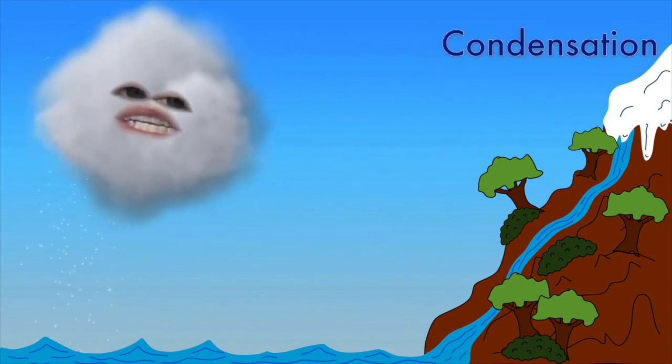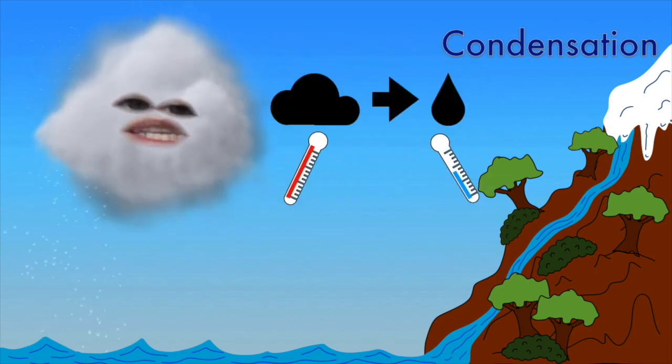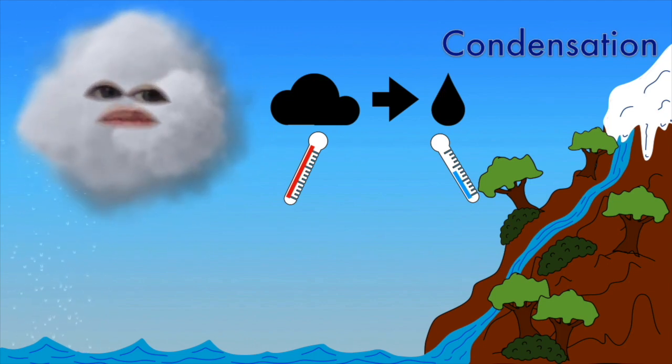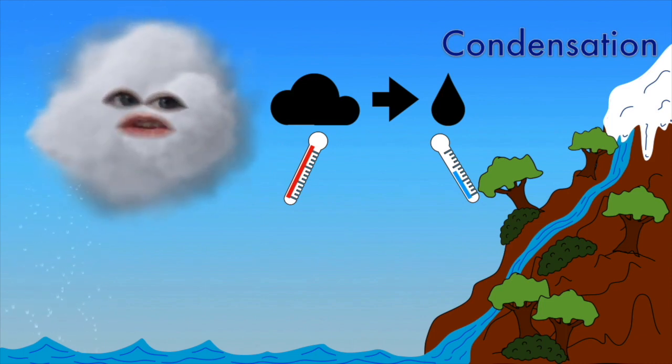The fourth stage is condensation. High up in the sky it can get very cold and this temperature change turns the gas back into a liquid, forming new water droplets. The process then starts all over again with new rain beginning to fall.